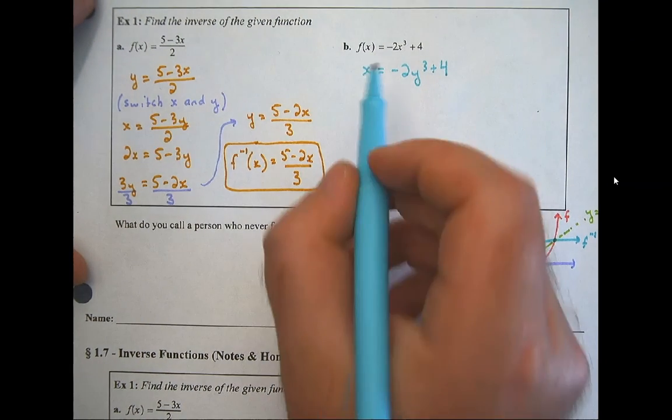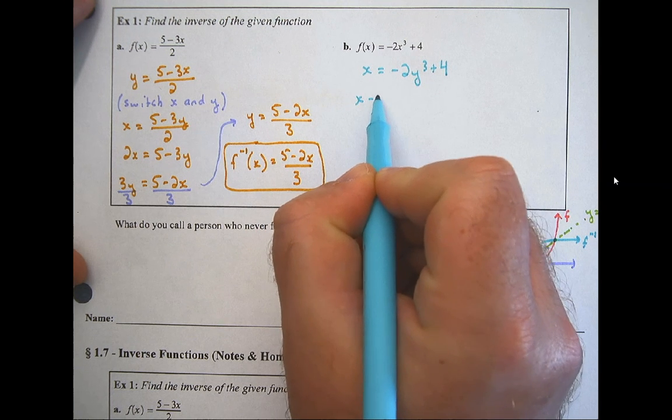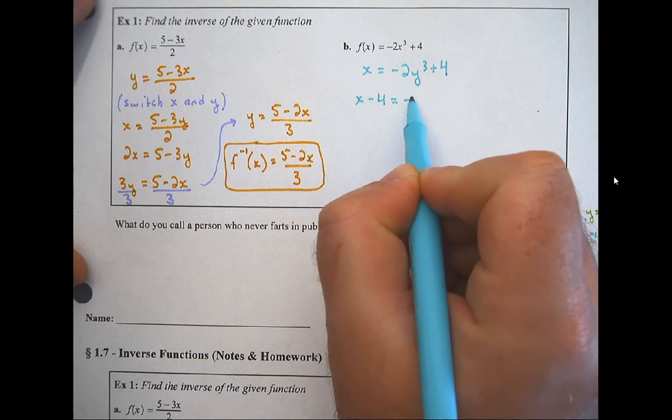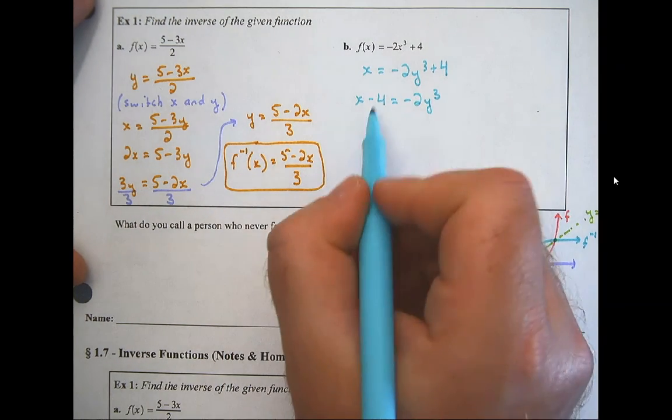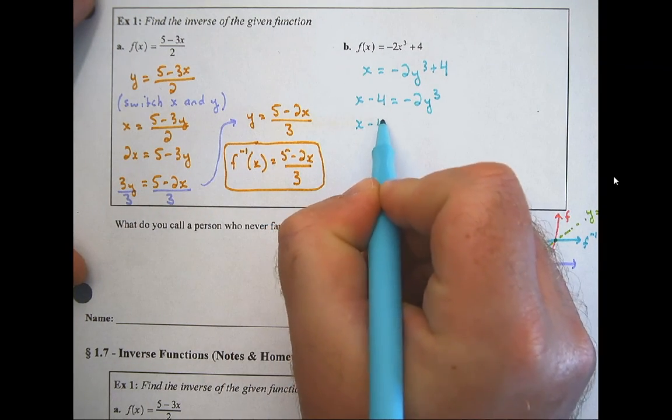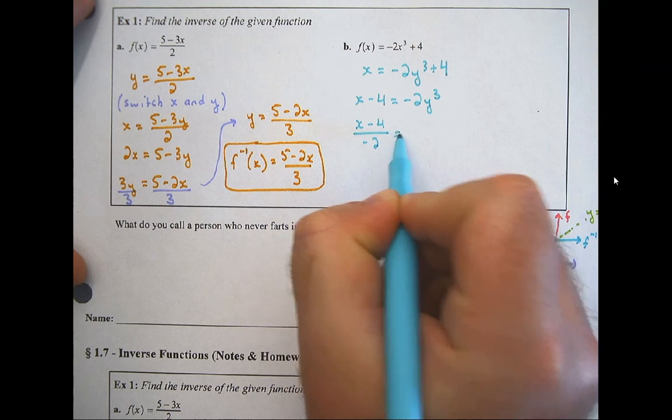So I switched x and y, and now I'm going to move things around until I get y by itself. So farthest away is this plus 4. That's going to become x subtract 4. Negative 2y cubed. Farthest away is the minus 2, so I'm going to divide. So x subtract 4 divided by negative 2 equals y cubed.